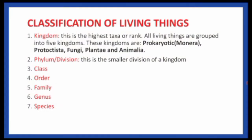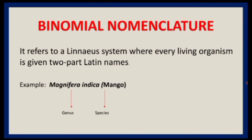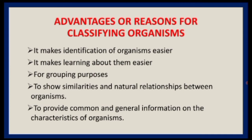Advantages of classifying organisms: It makes identification of organisms easier since they are arranged in kingdom, phylum, class, order, family, genus, and species based on common characteristics. It makes learning about organisms very easy. It serves grouping purposes and shows similarities and natural relationships between organisms. It also provides common general information on the characteristics of organisms, enabling scientists to make references to the same organisms.